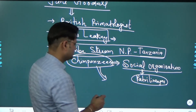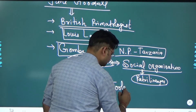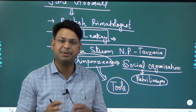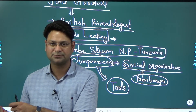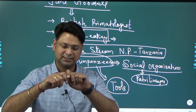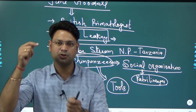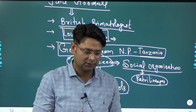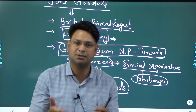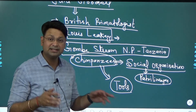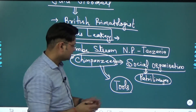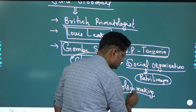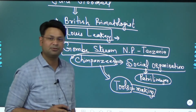Second observation: she observed that chimpanzees make tools. She saw a chimpanzee using a twig - taking a twig from a plant, breaking it, and using it to fish out termites from their mound. That behavior shows chimpanzees have tool-making behavior.